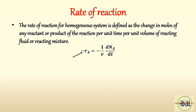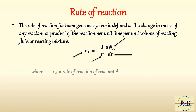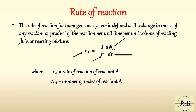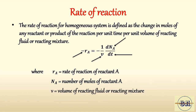This formula represents the change in the number of moles of any reactant or product per unit time, per unit volume of the reacting fluid. Where minus rA is the rate of reaction of reactant A, NA is the number of moles of reactant A, V is the volume of the reacting fluid, and T is the reaction time.